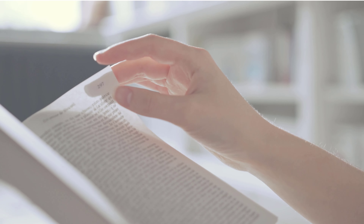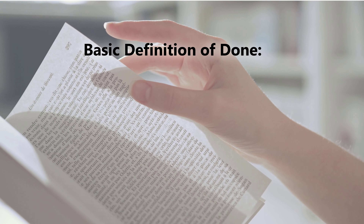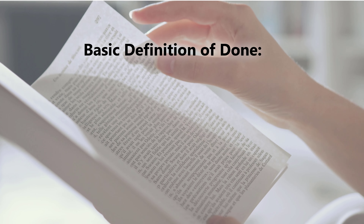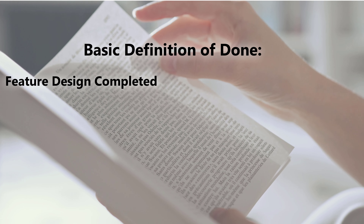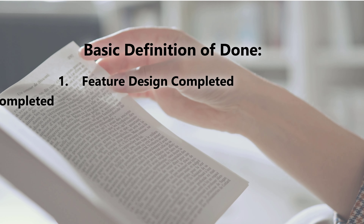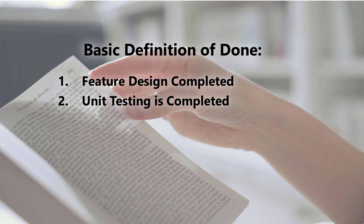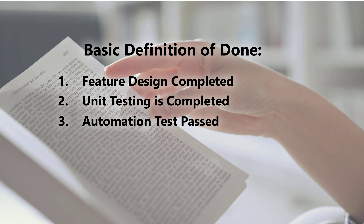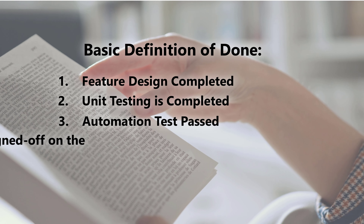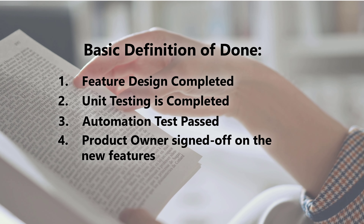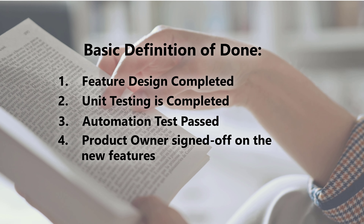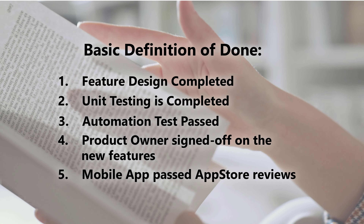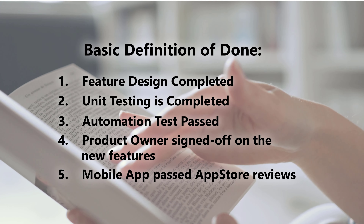Here is a sample, very basic definition of done, which consists of five checklist items. Number one: feature design completed. Number two: unit testing is completed. Number three: automation test passed. Number four: product owner signed off on new features. And number five: mobile app passed App Store reviews.